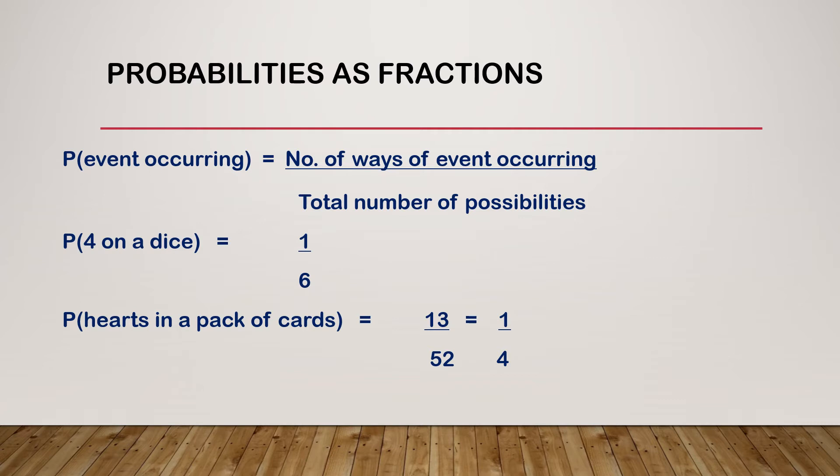This can then be simplified to one quarter. We'll look at simplification of fractions in a different video. So the probability of an event occurring as a fraction is always the number of ways that event can occur over the total number of possibilities.